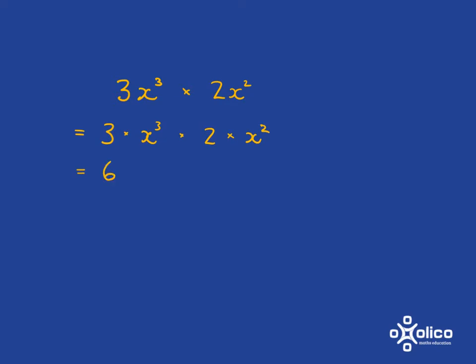And then we're going to say x cubed multiplied by x squared. And x cubed means you've got 3 x's multiplied together, x squared means you've got 2 x's multiplied together. So in total, you'll have 5 x's multiplied together. So remember our rule for exponents is if we're multiplying the numbers, we add the exponents.